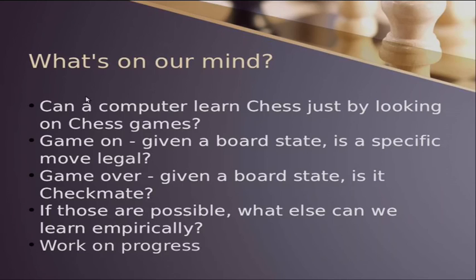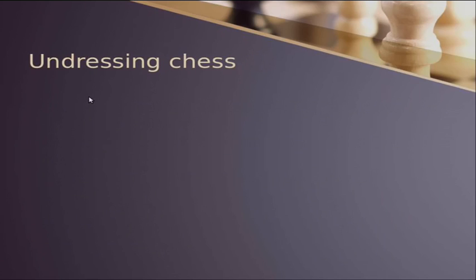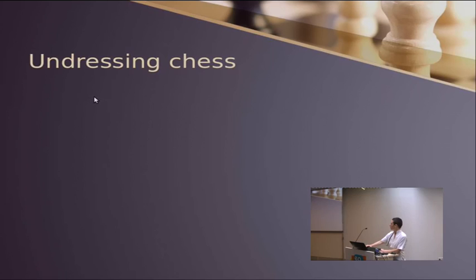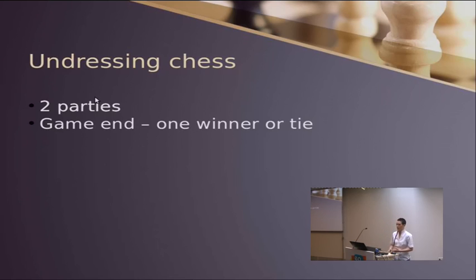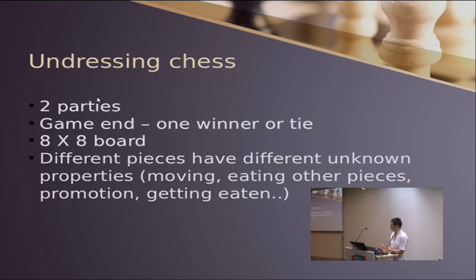So let's start. What we know about chess - there is constant tension between features that we allow ourselves to know when doing this learning process and features or other things that we want to learn. First, we know that there are two sides, two parties who play the game. We know that a game could end with either one winner or a tie, no two winners or other situation. We know that the board is eight by eight and doesn't change through the game. We know that there are different pieces that have different unknown properties, such as how can those pieces move, can they eat other pieces, what happened to them when they get eaten, maybe promotion for pawns, and so on.